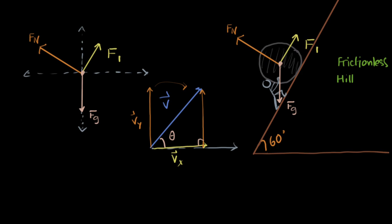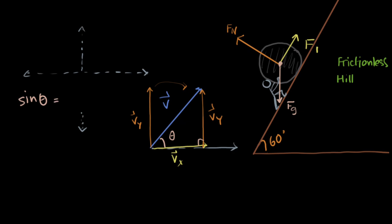For Vy, we know that sine theta equals perpendicular over hypotenuse. The perpendicular of theta is Vy and the hypotenuse is our vector V. Cross-multiplying gives us: Vy = V·sinθ. That's pretty nice!